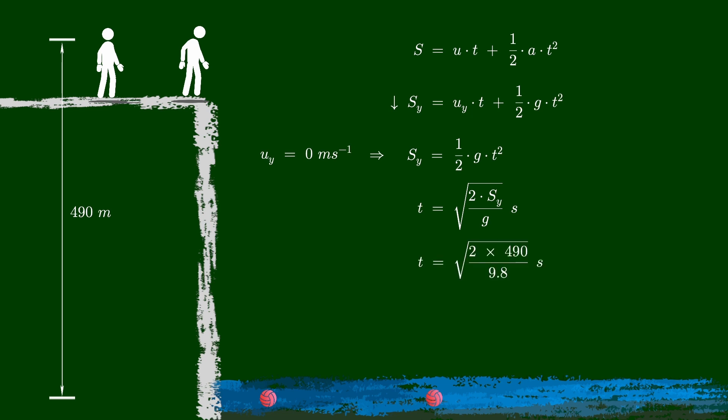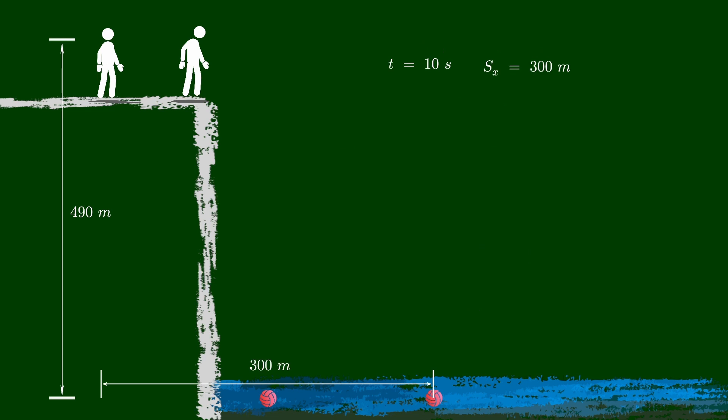Let's enter the provided information and calculate the time for the trajectory. In this case, it takes 10 seconds to reach the bottom of the cliff. This is the amount of time it takes the ball to go through the air. During this time, the ball travels 300 meters in a horizontal direction. As a result, dividing the displacement by the flight time yields the required velocity to move 300 meters in 10 seconds. This translates to 30 meters per second.